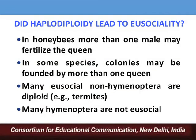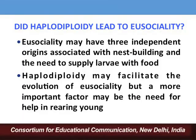This has been objected to because in many honey bee colonies more than one male may fertilize the queen, reducing relatedness among workers. In some species colonies may be founded by more than one queen, again reducing relatedness. Also, many eusocial species are not haplodiploid and many haplodiploid species are not eusocial. It has been suggested that eusociality may have arisen independently multiple times and is associated with nest building, need to supply larvae with food, and the need for help in rearing the young.